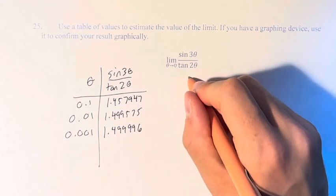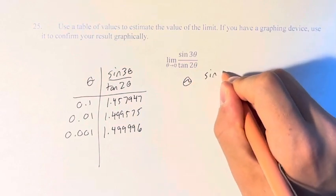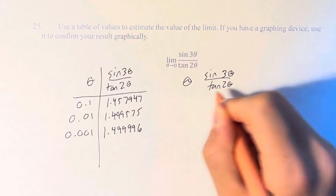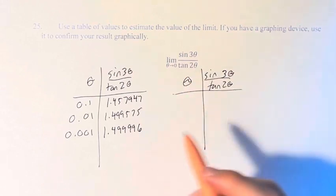We also have to try from the left. So again, doing the exact same thing. But for values of theta that are less than 0,